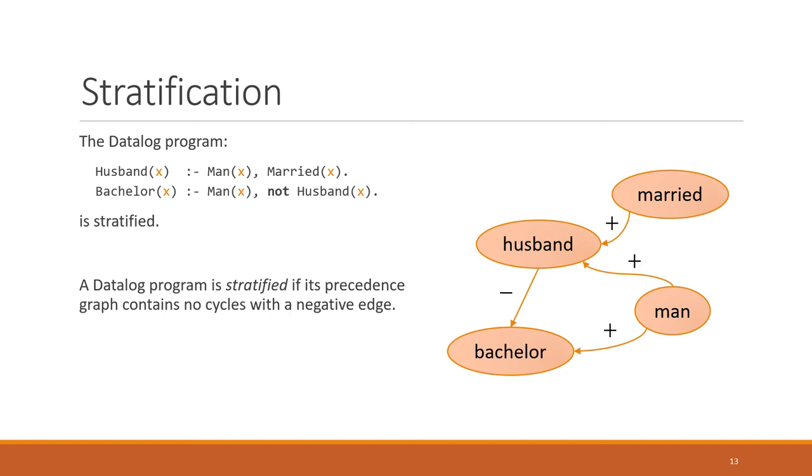So an important aspect of Datalog is negation. A lot of expressive power in Datalog comes from negation. So just to briefly explain what this is about, I might have a Datalog program like this where I say, well, a husband X is a man who is married, whereas a bachelor is a man who is not a husband. So this Datalog program is a legal stratified Datalog program. And the reason is when we construct the dependency graph, also called the precedence graph shown here, there are no cycles with a negative edge. It's also sometimes expressed as there's no recursion through negation. So the takeaway is that such a program is legal and it has a well-defined meaning and a minimal model.